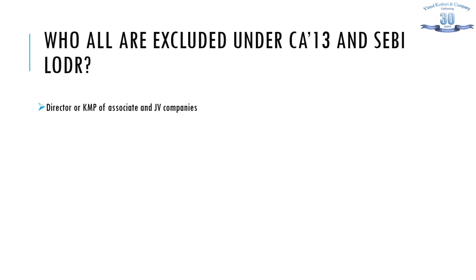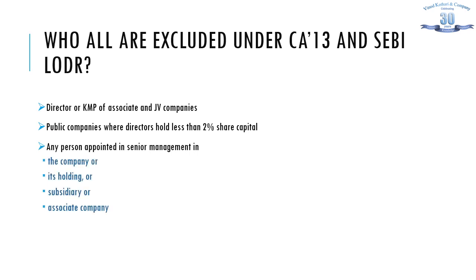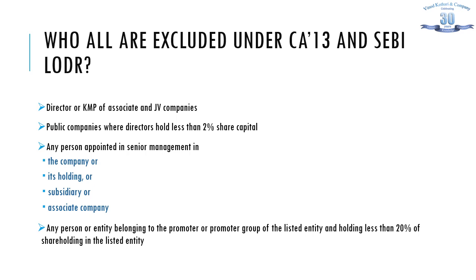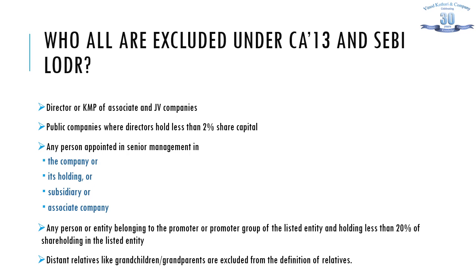The exclusions include: Director or KMP of Associate and JV Companies; Public Companies where Directors hold less than 2% share capital; any person appointed in Senior Management in the company, its holding, its subsidiary or associate company; or any person or entity belonging to the Promoter or Promoter Group of the listed entity and holding less than 20% of the shareholding in the listed entity; and distant relatives like grandchildren and grandparents are excluded from the definition of relatives and hence are also outside the purview of Related Parties.